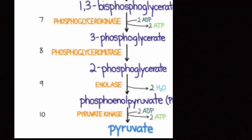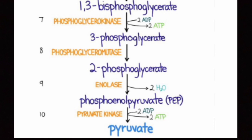Step 7: 1,3-bisphosphoglycerate is converted to 3-phosphoglycerate by the enzyme phosphoglycerate kinase. This kinase transfers the phosphate group from the first position of the bisphosphoglycerate to ADP, generating a molecule of ATP. Step 8: 3-phosphoglycerate is converted to 2-phosphoglycerate in a rearrangement reaction catalyzed by the enzyme phosphoglycerate mutase. Magnesium ions are also utilized in this reaction.